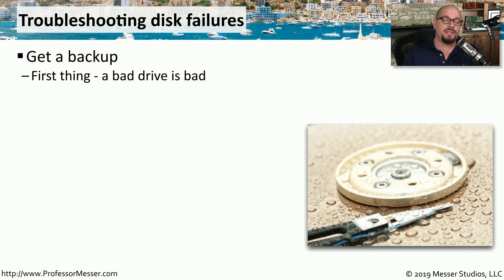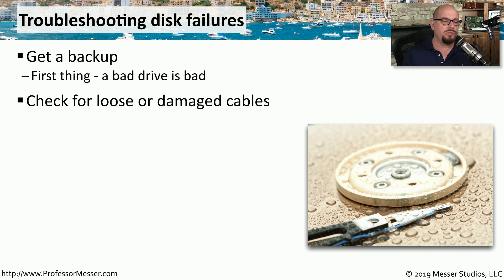If any of this is happening, the first thing you should do is get a backup of all of that data. If this drive does happen to fail, you want to be sure that you at least have a copy of all of your important information. Then you want to look for any loose or damaged cables that might be inside of your computer — maybe the problem is simply the cable connection and nothing related to the overall operation of the drive.